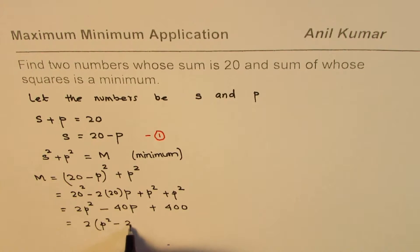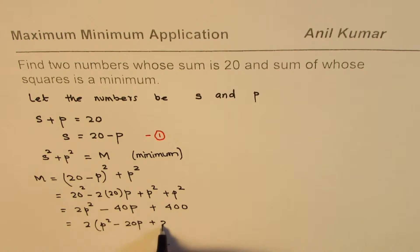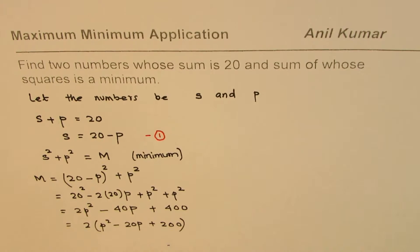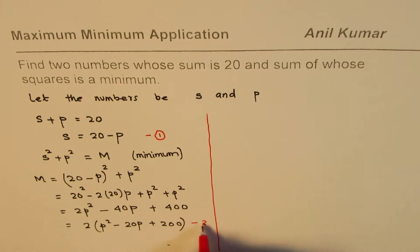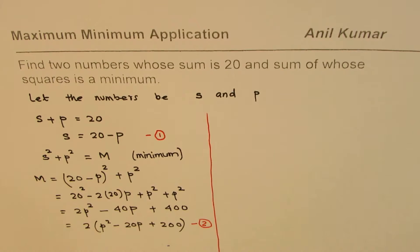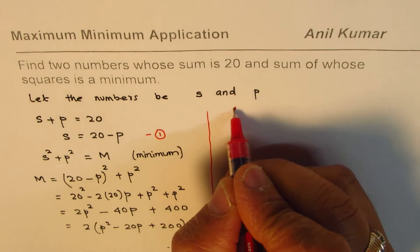You could take 2 common, so we say 2 times (p² minus 20p plus 200). That is what you get here. This is your equation in single variable. Now to find minimum at this stage, you can do a couple of methods. What I will do is completing the squares.